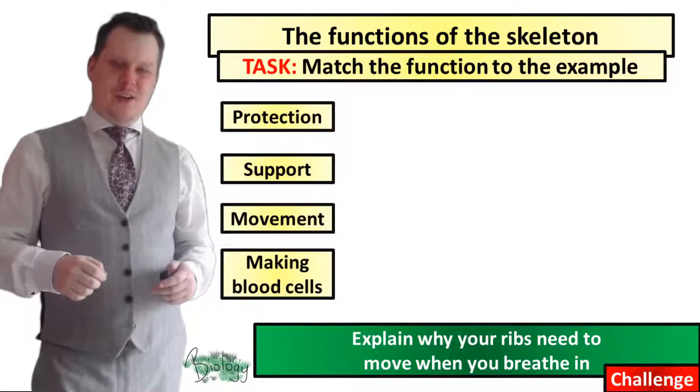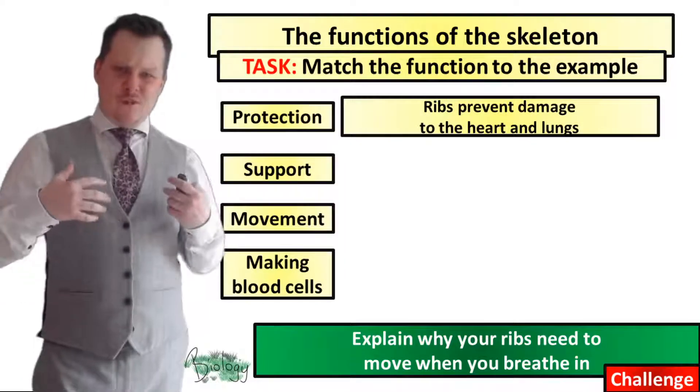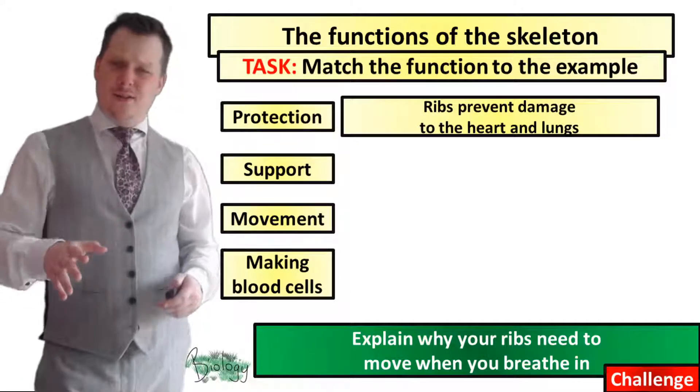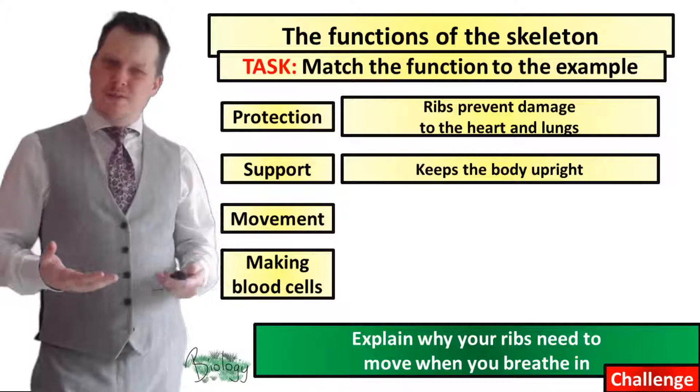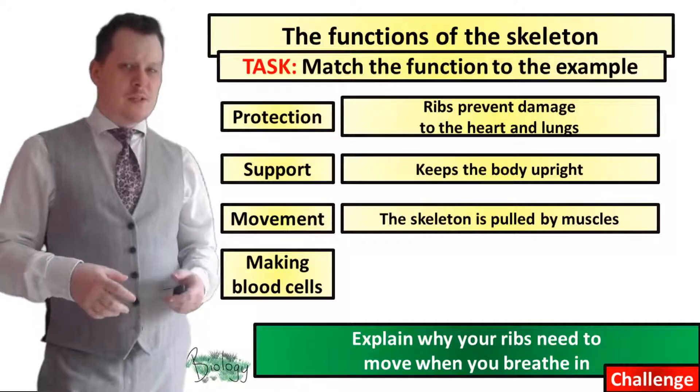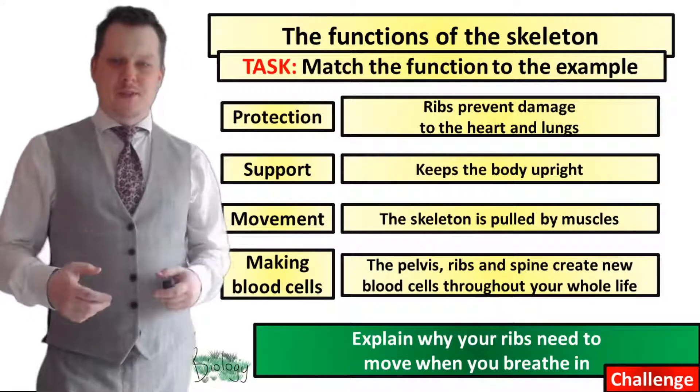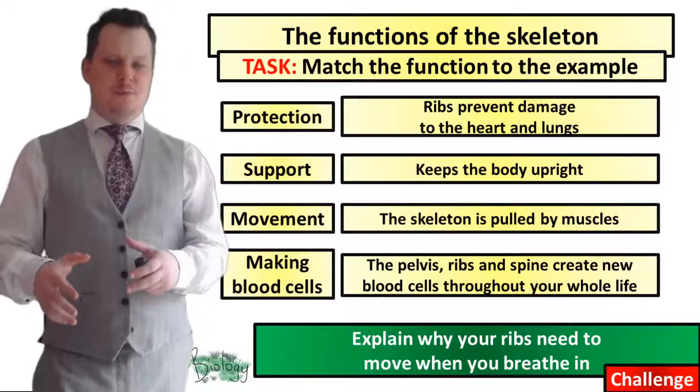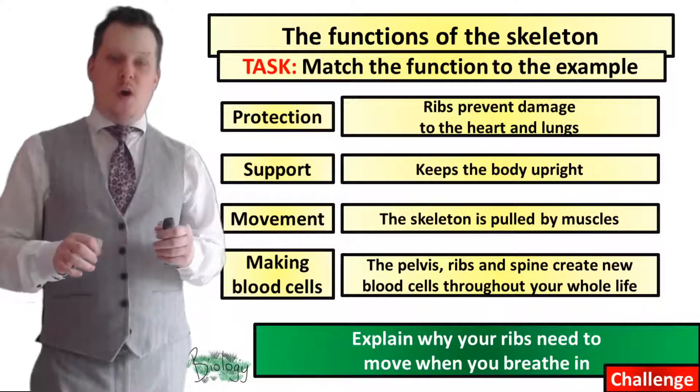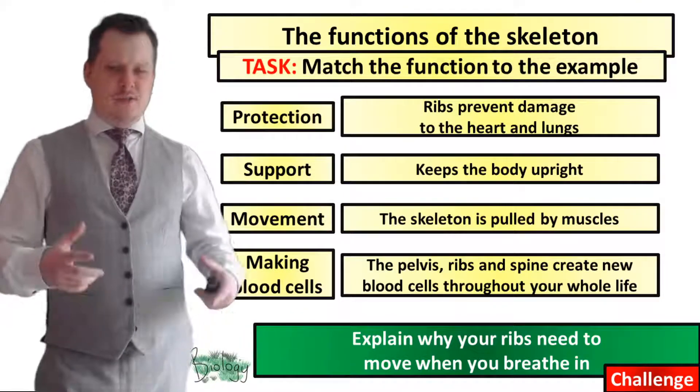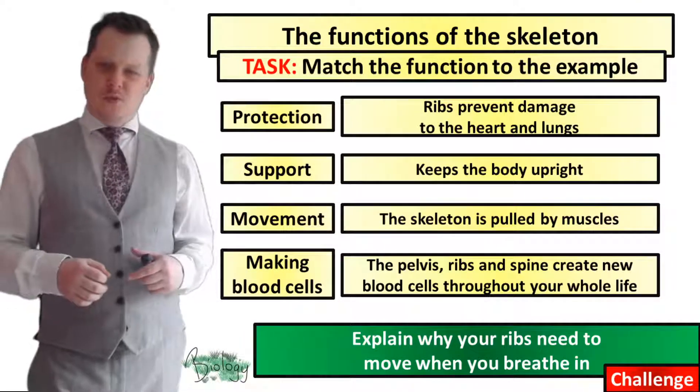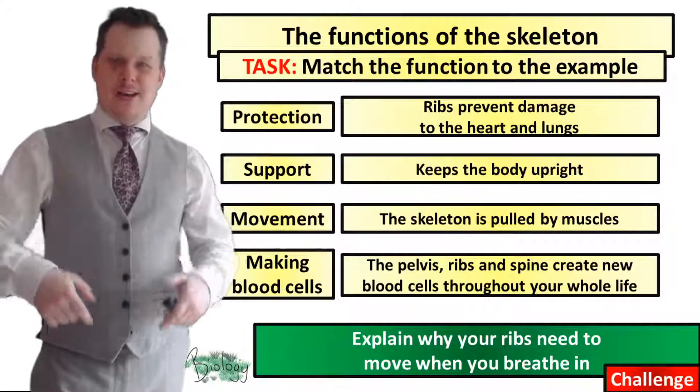Alright are we all finished? So an example of protection is that the ribs prevent damage to the heart and the lungs. Support keeps the body upright. Movement: the skeleton is pulled by the muscles. And making blood cells: the pelvis, the ribs and the spine create new blood cells throughout your whole life. This challenge question, if you can explain why your ribs need to move when you're breathing then I'd like to put that down in the comments below.